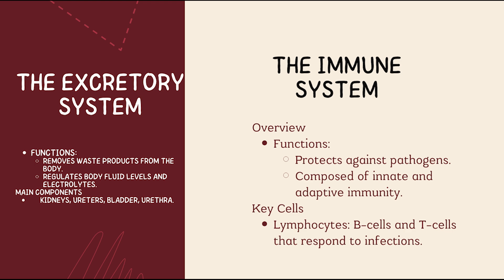Your immune system defends against infections. There are two types: innate immunity and adaptive immunity. Innate immunity is the first line of defense — like skin or inflammation. Adaptive immunity learns to recognize and attack specific invaders using B cells and T cells. Vaccines work by training your adaptive immune system.